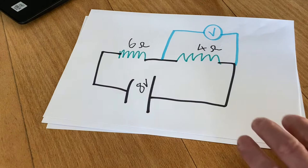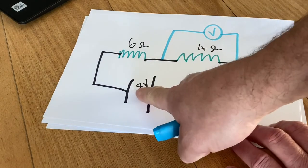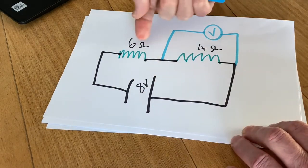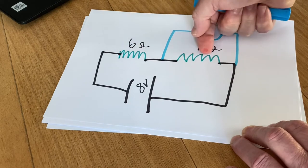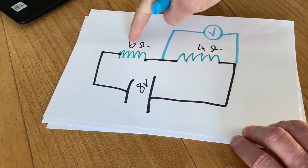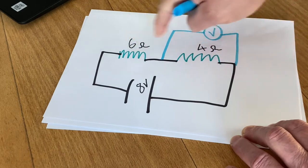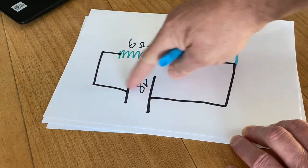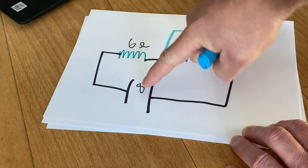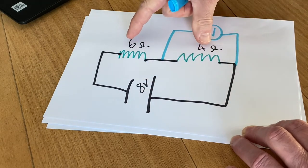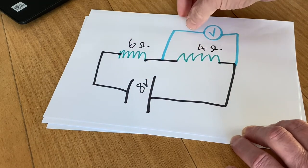For the whole circuit, we know that we've got an 8 volt supply and we know that we've got two resistors in series, so the total resistance will be 6 plus 4, which is 10. So the information is that we've got an 8 volt supply and a 10 ohm total resistance. So let's put that into another triangle.